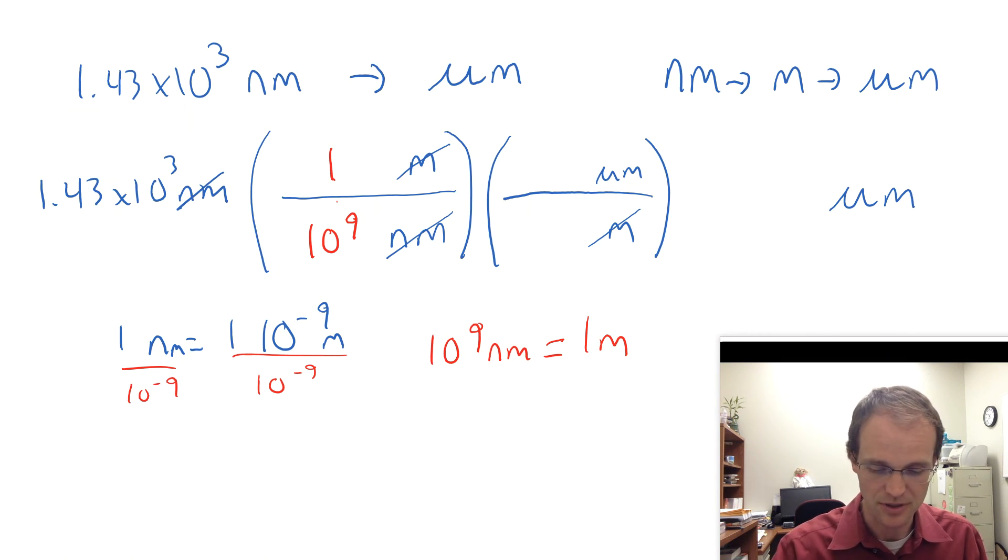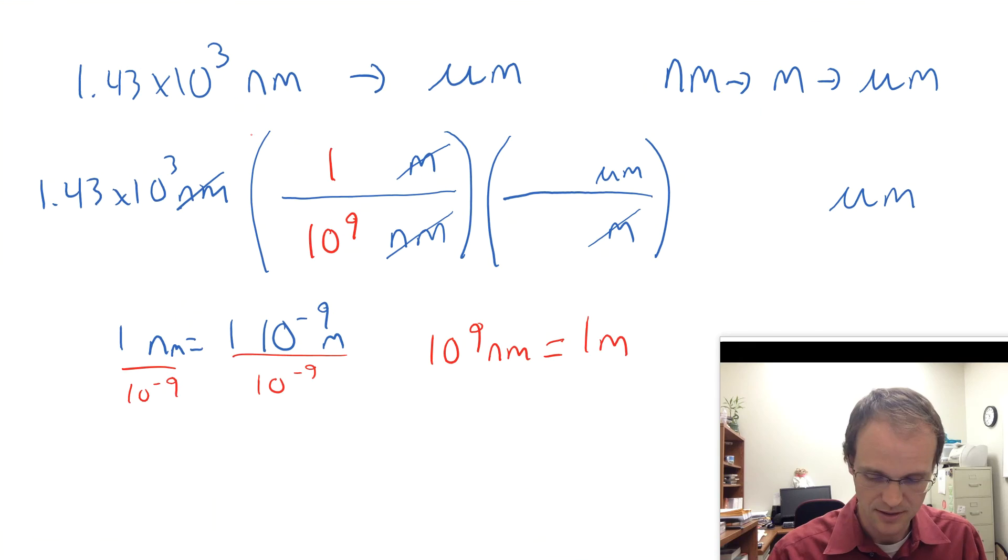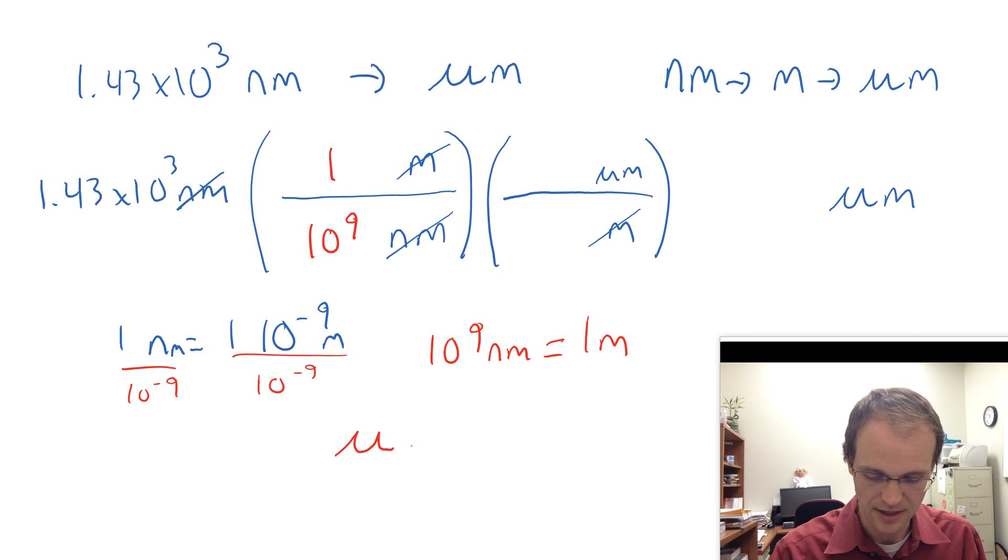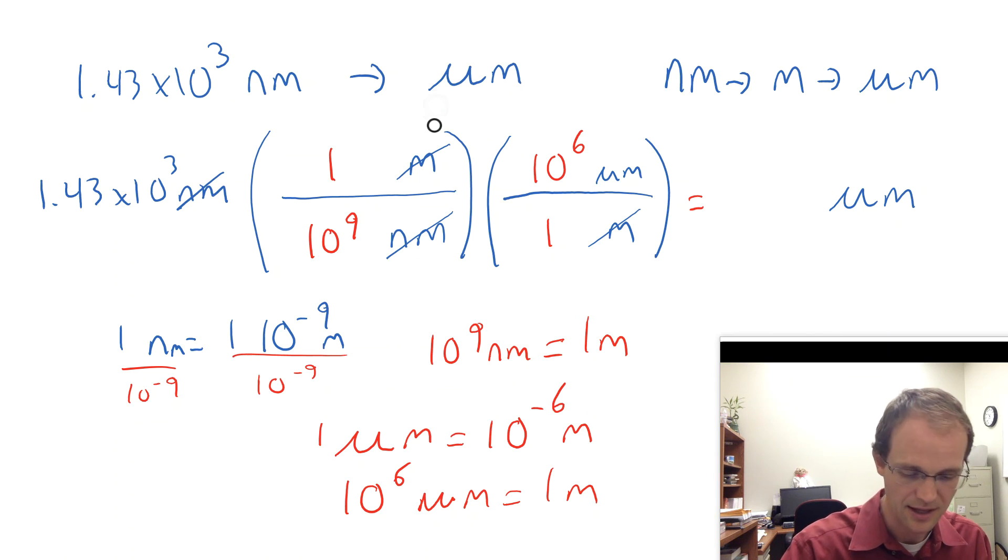Same thing for micrometers. I remember that it's defined as 10 to the minus sixth. So a micrometer is 10 to the minus sixth meters. But I could also divide both sides by 10 to the minus sixth. And then you get that there are 10 to the positive sixth micrometers in one meter. And so I'm going to write a 10 to the positive sixth here, a one down there. And let's see what we get. We get 10 to the third times 10 to the sixth. Well, that's 10 to the ninth. Divide it by 10 to the ninth. And you get 1.43 micrometers.